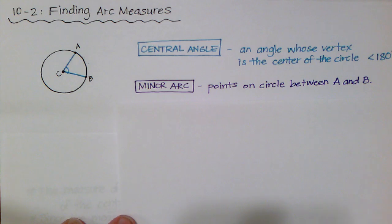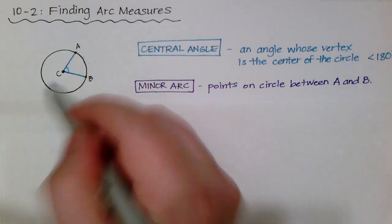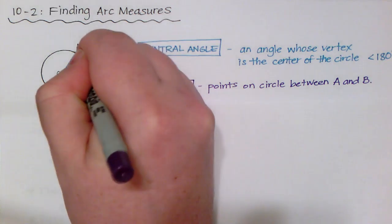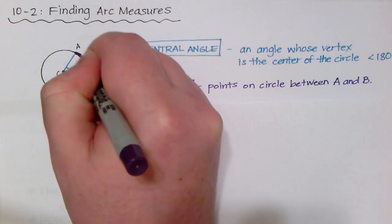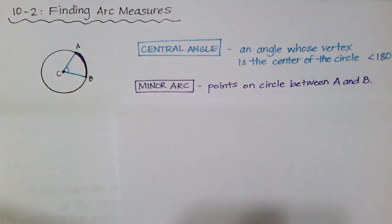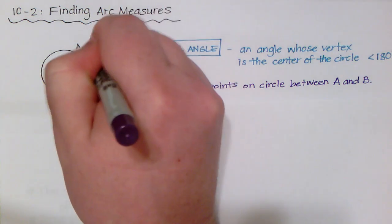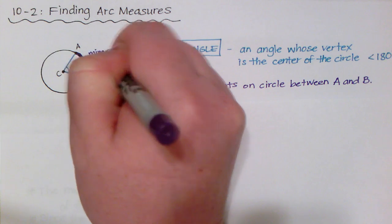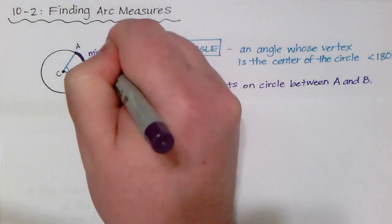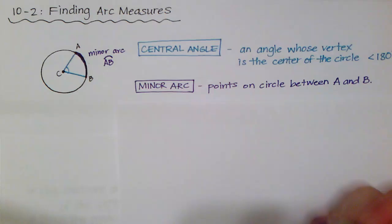And because of the central angle, I can find a minor arc. And a minor arc is the points on the circle between A and B. So, if I have my central angle, then the arc, which is on the circle, really it's adding up all those points. It's called the minor arc. So, let's write that down. Minor arc. And typically, we're going to use those two endpoints to give it a name and put a little arc above it. And that's how we're going to name the minor arc.